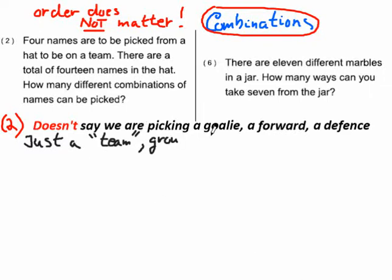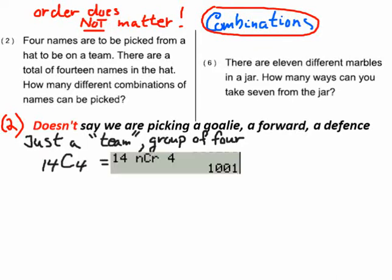We're just selecting a team — it doesn't say anything about a goalie or a forward, or a president and vice president. We're just grabbing a handful of students to make a volleyball team or something. So it's 14 combo 4 — there'd be 1,001 different teams you could make.